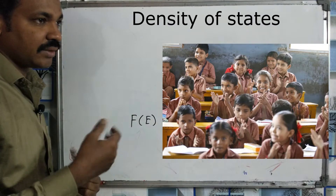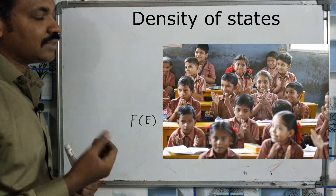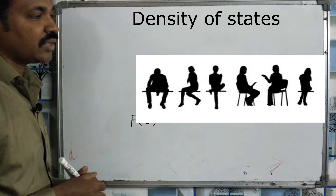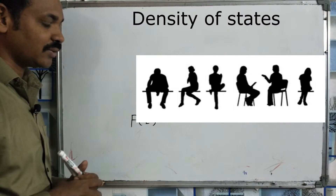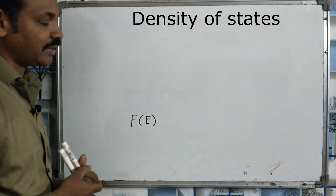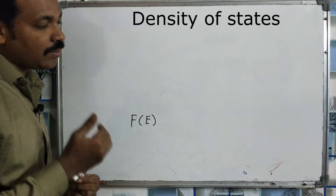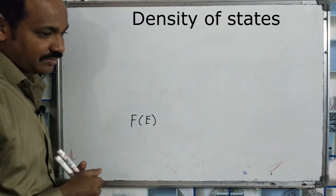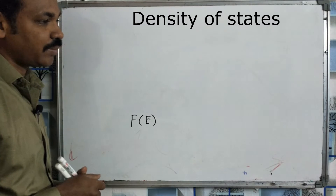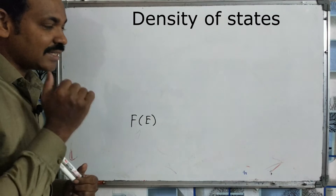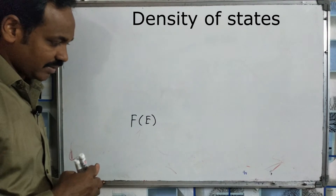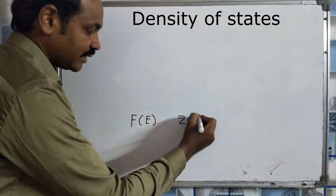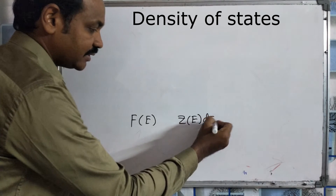If we put them on a different side, the classroom, the hotel, the bench will all be different. The probability is that there is probability. But for any number of energy states, quantum states, or any energy levels, the Fermi function does not give the count. The density of states is denoted as Z.